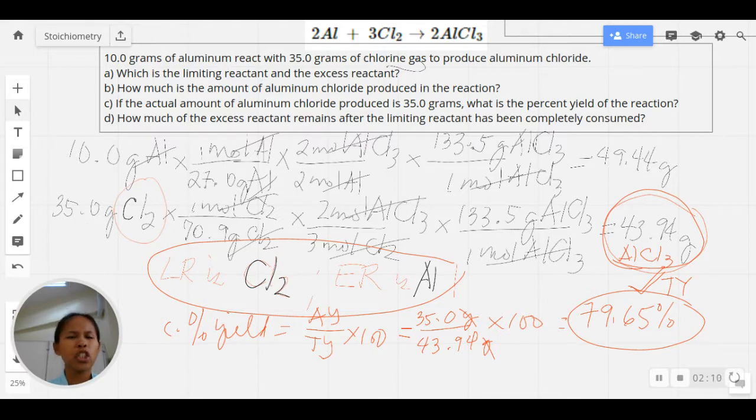To approach this problem, it's just very logical. We have to know how much does chlorine, our LR, need from your ER. So we need to have a conversion from 35 grams CL₂ to grams aluminum, and that answer will tell us the amount that will react with your 35 grams of chlorine. We would expect that amount to be less than 10 grams, correct?